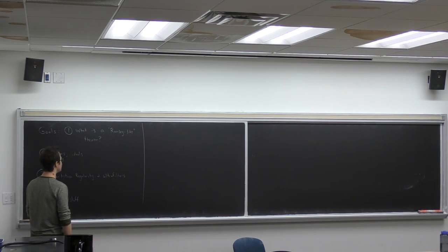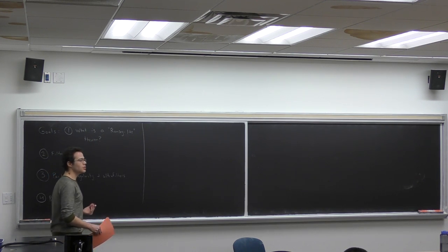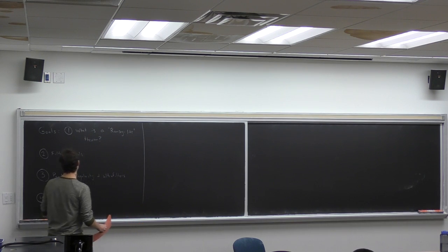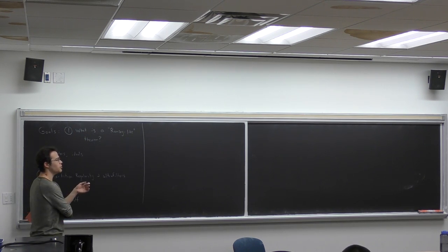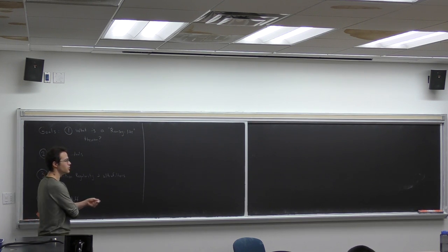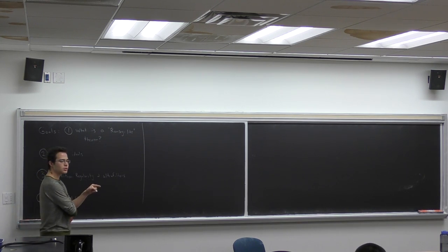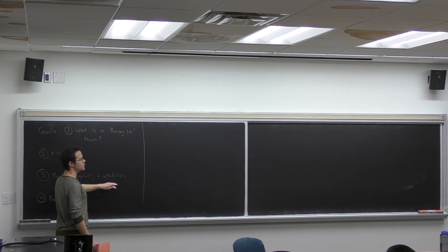Happy to be speaking today. So what are we doing today? First off, I hope to explain what I even mean by a Ramsey-like theorem. I'm certainly going to talk about Ramsey's theorem — that is the prototypical Ramsey-like theorem — but we're going to talk about a few others as well. And then we're going to take a detour into the abstract and talk about some properties that a collection of sets might have: a collection of sets might be a filter, or an ideal, or an ultrafilter, etc. I'll define all these things.